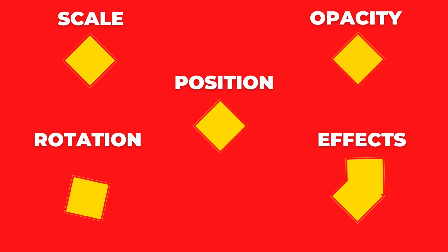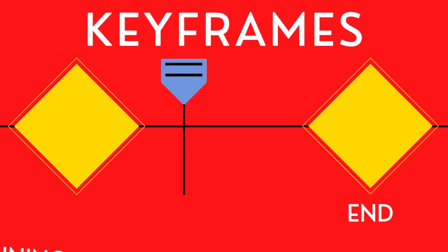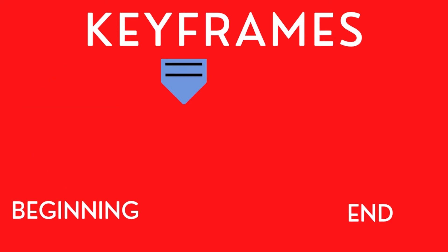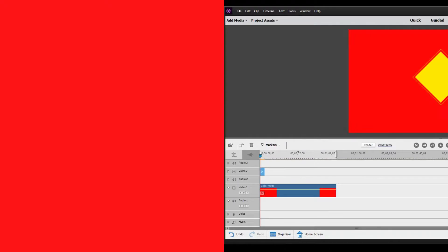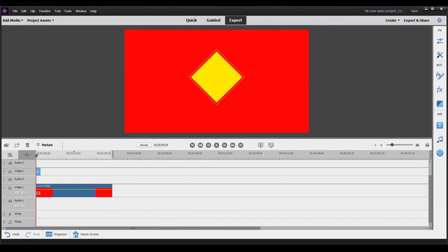Keyframes change a property — for example, position or scale — over time. Adobe explains that to create a change over time, you need at least two keyframes: one keyframe at the beginning of the change and another keyframe at the end of the change. Once those two keyframes are set, Premiere Elements creates a gradual change between the two keyframes. After I go through a couple of examples, it should make more sense.